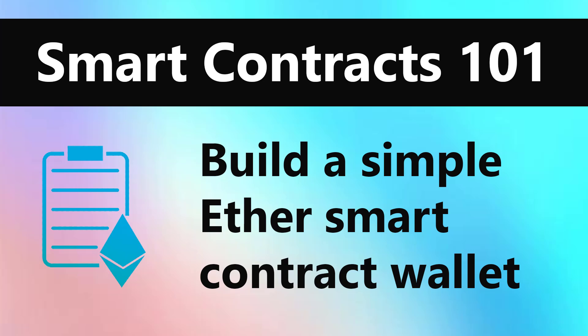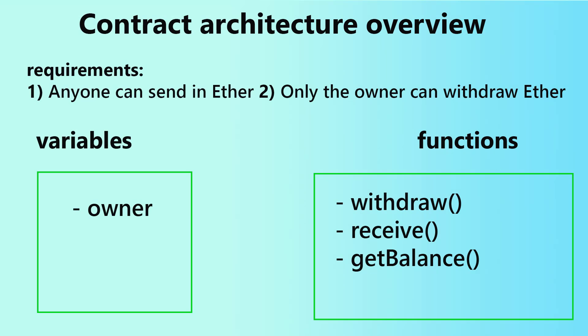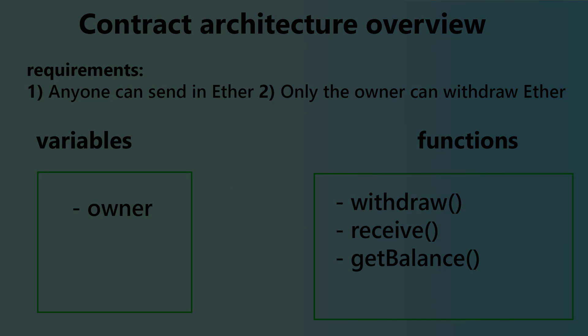So if that sounds good, stick around and let's get started. This smart contract is going to be a basic wallet for storing and receiving Ether on the blockchain. There are only two requirements: one, the contract can receive Ether sent in by anybody, and two, only the owner of the contract can withdraw funds. So let's go over to our Remix code editor and see how we can code this up.